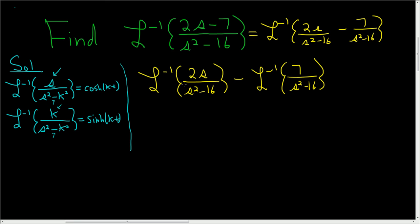Let's go ahead and pull out the constants. So we can do that because the inverse Laplace is linear. So pulling out the 2, here we get s over s squared minus 16. And then here we get minus 7 inverse Laplace of 1 over s squared minus 16.